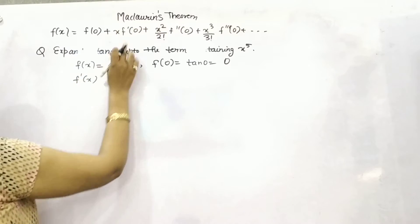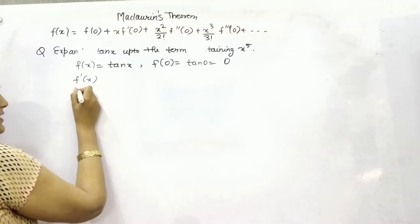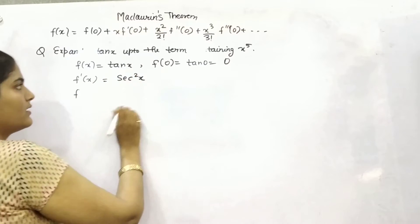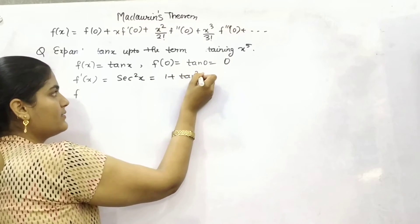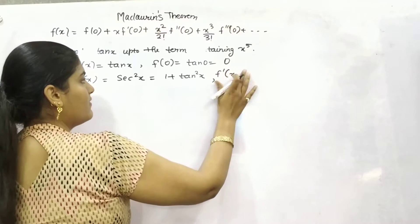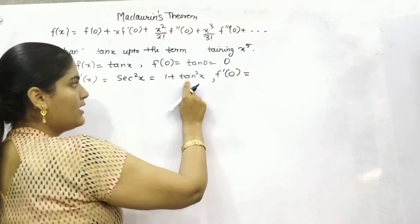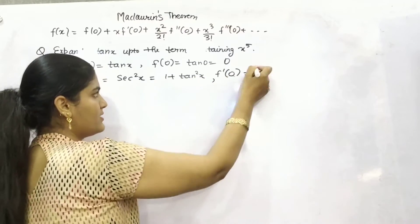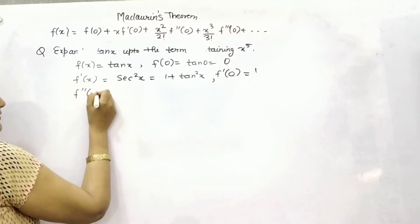Now you need to find the first derivative, second derivative, third derivative, up to the fifth derivative. The first derivative of tan(x) is sec²(x), and you can write it as 1 plus tan²(x). So the single derivative at point 0 will be: tan(0) is 0, leaving just 1.